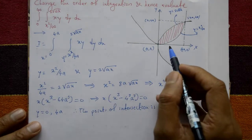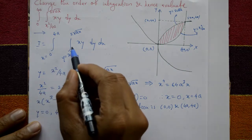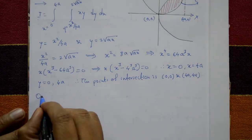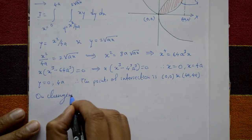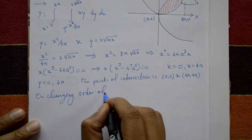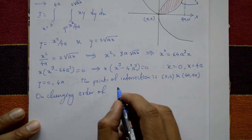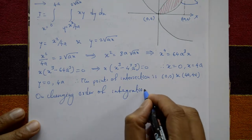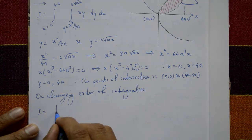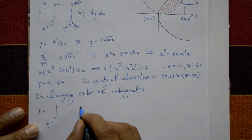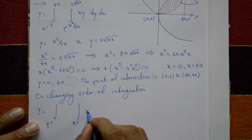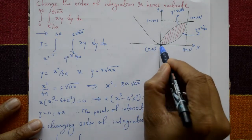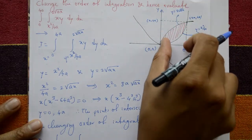Now change the order of integration. In the original, x is the outer variable and y is the inner. After changing the order, y becomes the outer variable and x becomes the inner. The function xy remains as it is.